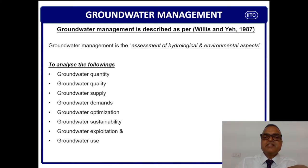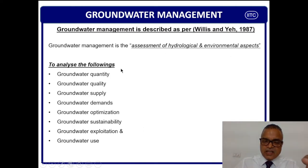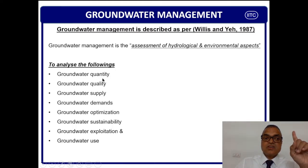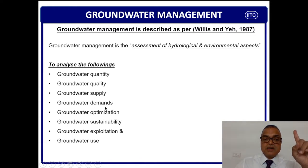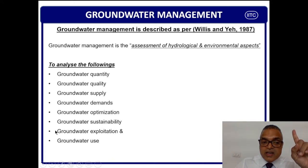Groundwater management, as defined by Wilts in 1987, is the assessment of hydrological and environmental aspects, including groundwater quantity, quality, supply, demand, optimization, sustainability, exploitation, and use. When doing assessment of hydrological as well as environmental issues, all these points must be analyzed one by one or together.